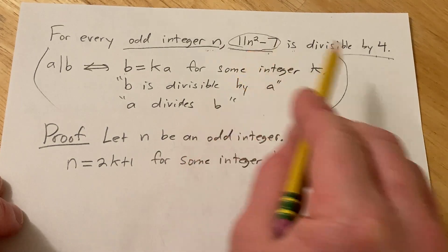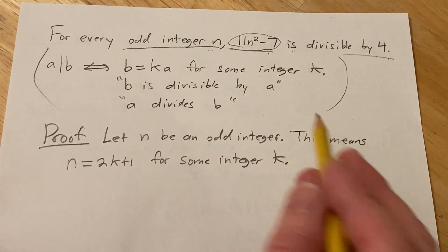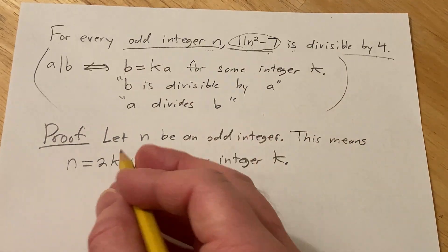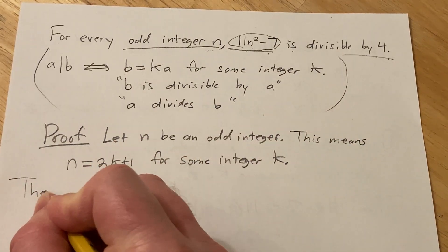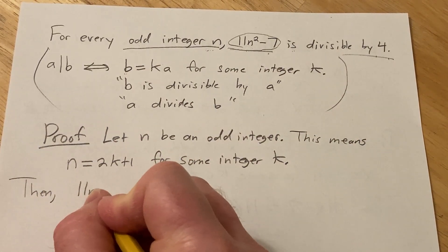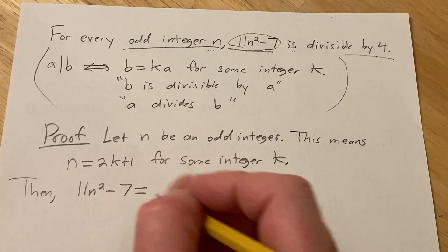So now we have to show that this is divisible by 4. So the natural thing to do is to write it down and see what happens. So then, 11n² - 7 is equal to,